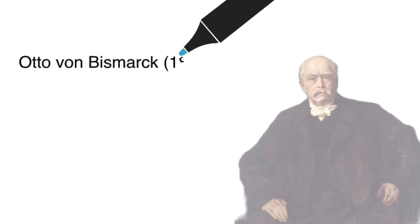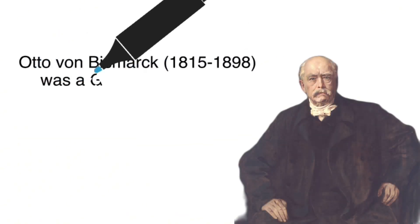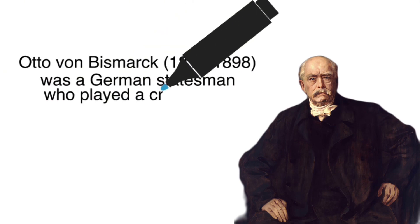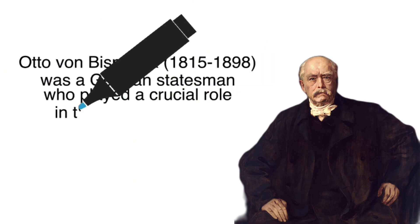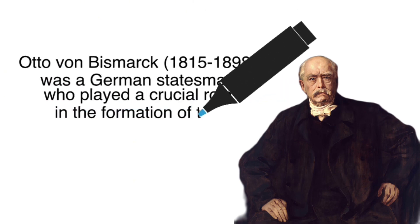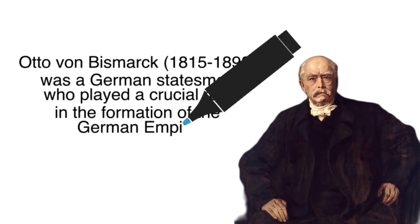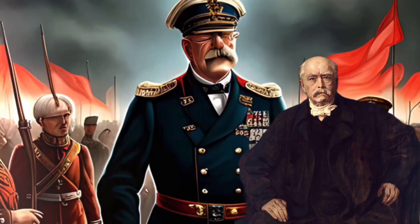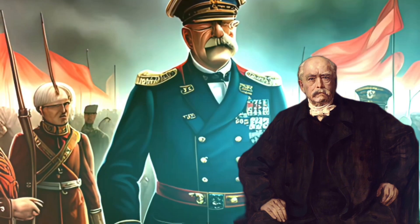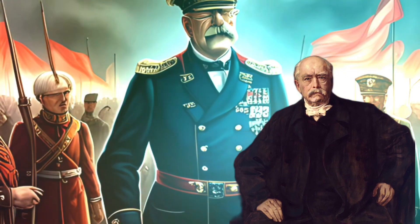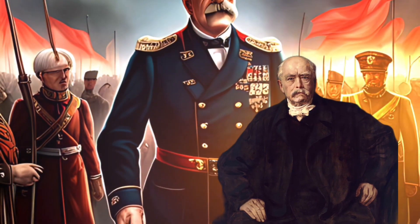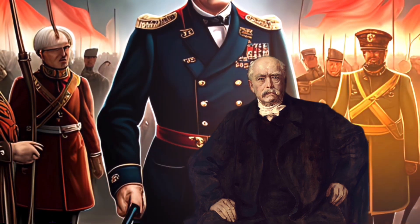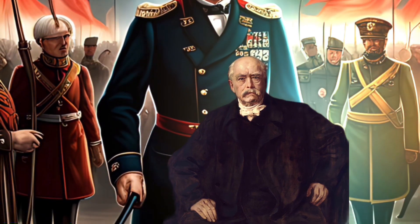Otto von Bismarck, 1815–1898, was a German statesman who played a crucial role in the formation of the German Empire in the late 19th century. He is considered one of the leading political figures in German history and was nicknamed the Iron Chancellor for his firmness in implementing his political policies.